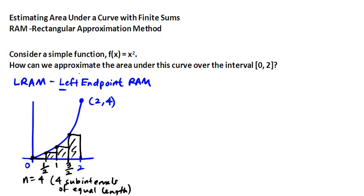So to actually figure this out, it's going to be the width of the rectangle, which is a half in all cases, times the function evaluated at the left endpoint, which the first one is f at 0, and then f at 1 half, and then f at 1, and then f at 3 halves.